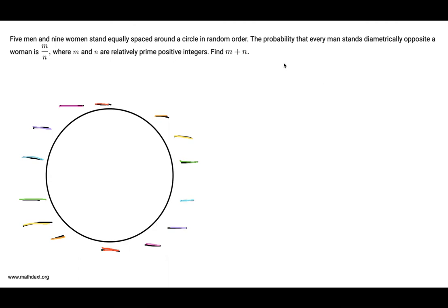So to begin, I have five men and nine women, and I want to place them so that every man stands diametrically opposite a woman. So I'll start by placing one of the guys. It doesn't matter which guy I place or where I place him.